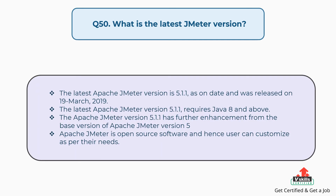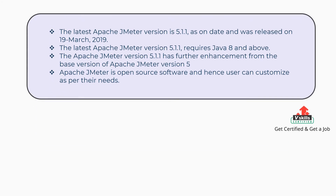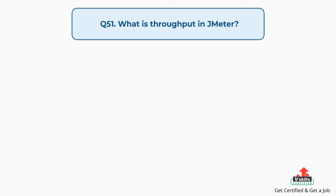Question 50: What is the latest JMeter version? The latest Apache JMeter version is 5.1.1, released on 19 March 2019. It requires Java 8 and above and has further enhancements from the base version. Apache JMeter is open source software and users can customize it as per their needs.